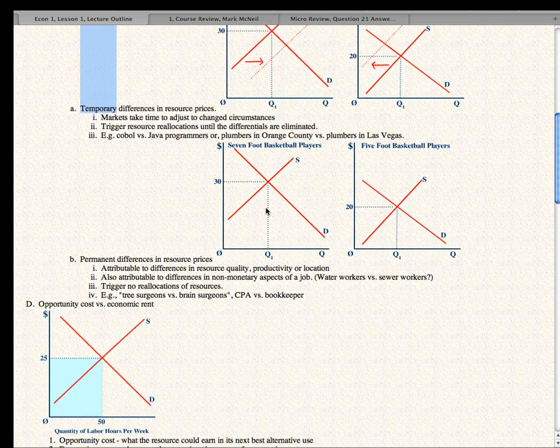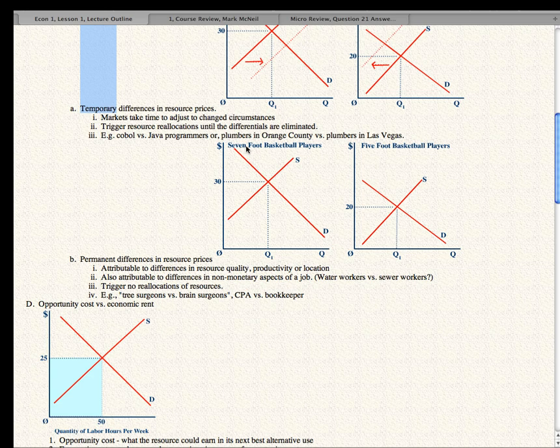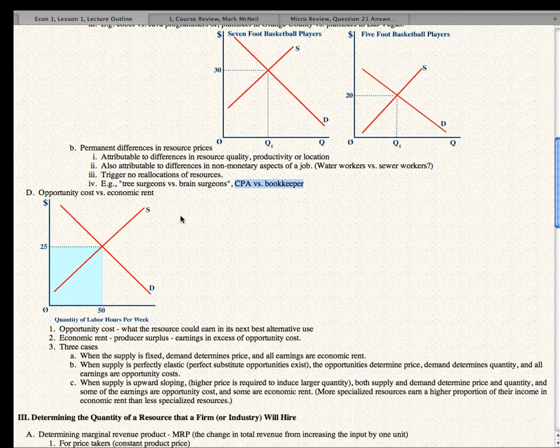But sometimes there are permanent differences in resource prices. For instance, seven-foot basketball players versus five-foot basketball players. Is it possible for five-foot basketball players to migrate over to the other market for seven-foot basketball players and cause the supply curve to increase? I think not. So these differences that are permanent are the result of resource quality, productivity, or location. Water workers versus sewer workers. In that case, there are non-monetary aspects of the job that cause the price differentials. In other cases, tree surgeons versus brain surgeons or CPAs versus bookkeepers. So those explain permanent price differentials.